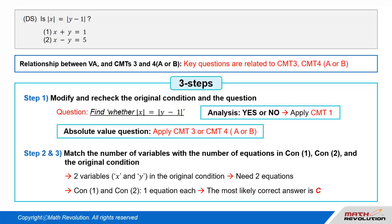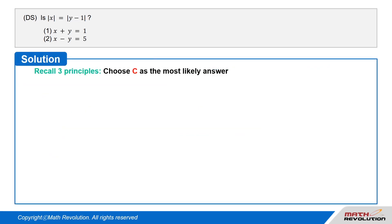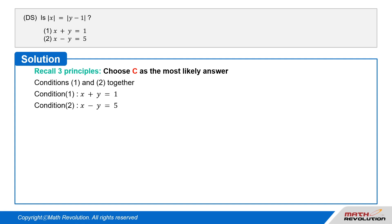Follow the second and third steps. From the original condition, we have two variables, x and y. To match the number of variables with the number of equations, we need two equations. Since conditions 1 and 2 will each provide one equation, C would most likely be the answer. Choose C as the most likely answer. Taking both conditions together, we get x plus y equals 1 and x minus y equals 5.